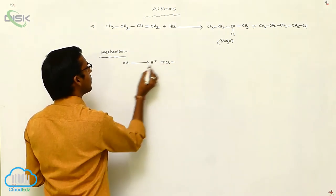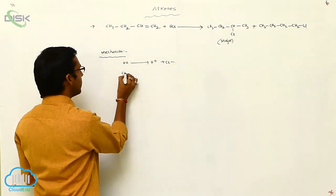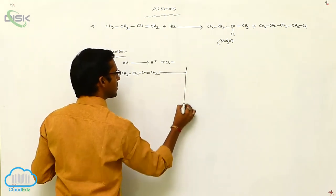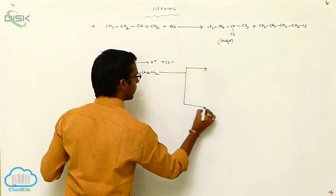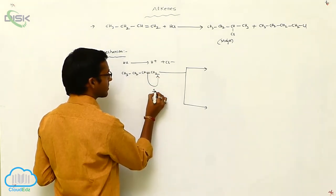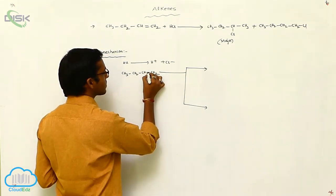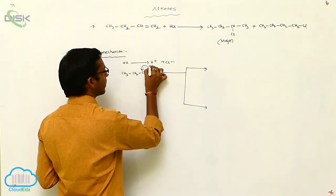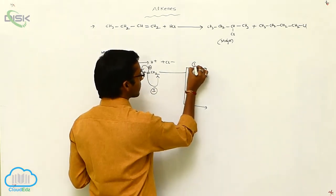Now, see the mechanism. Why is this your major product? HCl gives H⁺ and Cl⁻. Now, in this CH₃-CH₂-CH double bond CH₂, in this bond...